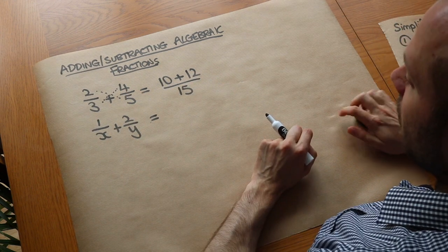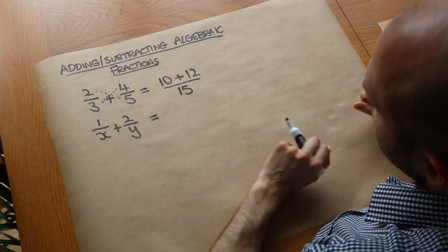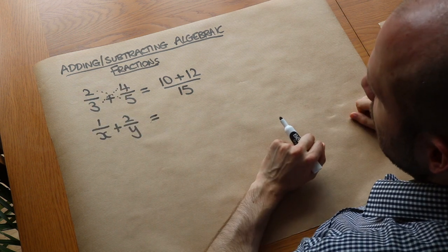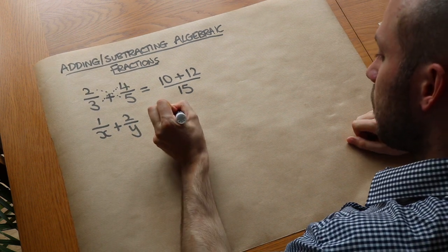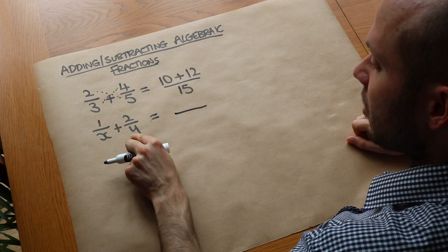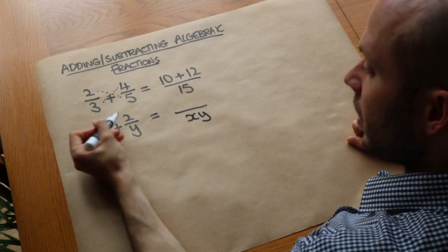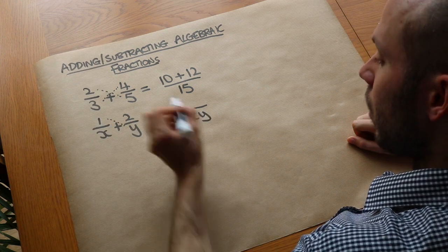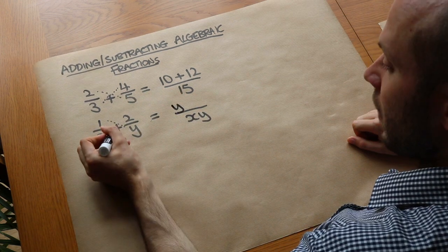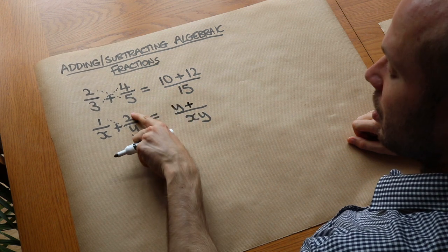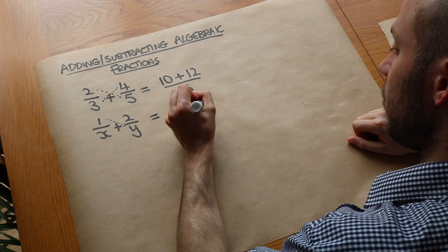And exactly the same method works when we've got algebraic fractions. Maths doesn't suddenly stop working just because we're using letters instead of numbers. So what would we do here? Well, we could multiply those denominators — x times y is just xy. That 1 gets multiplied by the y, giving y. And then the 2 gets multiplied by the x, which is 2x.